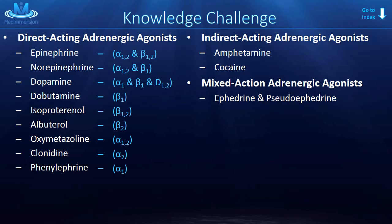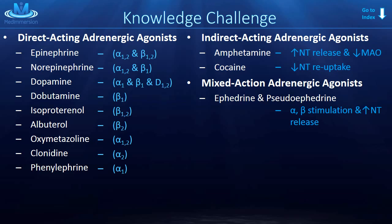Now on to the indirect acting adrenergic agonists, starting with amphetamine. Amphetamine causes an increase in the release of neurotransmitter — norepinephrine — from the presynaptic nerve. It also inhibits monoamine oxidase, which is an enzyme that degrades catecholamines. Cocaine works by blocking the reuptake of neurotransmitters into the presynaptic nerve or terminal. Lastly, the mixed action adrenergic agonists — ephedrine and pseudoephedrine. Both stimulate alpha and beta receptors, but also cause an increase in release of neurotransmitter from the presynaptic nerve.